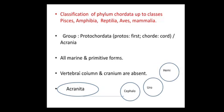As we know, Phylum Chordata is divided into two groups: Protochordata and Euchordata. 'Proto' means first, 'chorda' means chord, so these organisms show the presence of a notochord. There is an absence of cranium, which is the brain box — 'a' means absent — that is why these organisms are known as Acraniates. These organisms are all marine, and the primitive form vertebral column and cranium are absent.